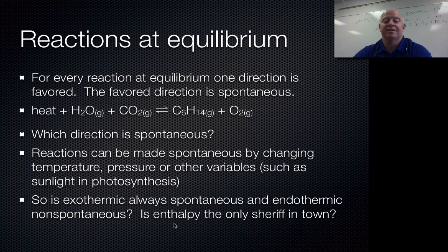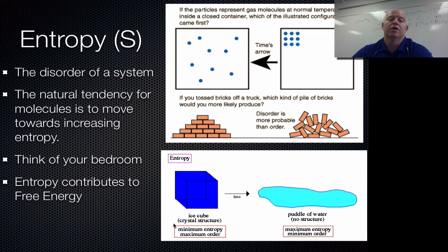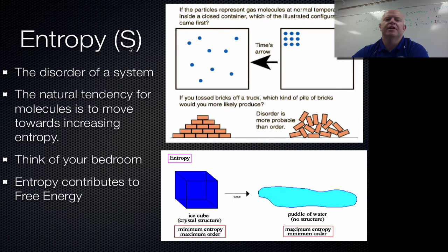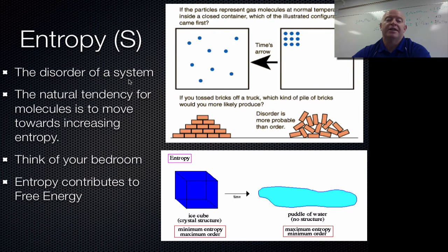Our other deciding factor is something called entropy, symbolized by S. Entropy measures the disorder of a system — it measures how organized something is.